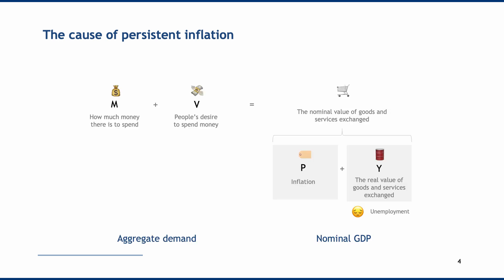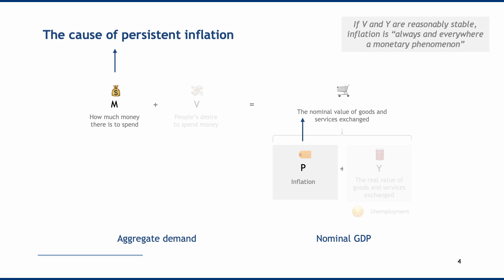However, macroeconomists tend to agree on the cause of persistent inflation: not changes in V and Y, because generally speaking V and Y are reasonably stable, especially over a long time horizon. Therefore the reason for excessive inflation is excessive money supply growth. In our model, if we hold V and Y constant and increase M, that clearly leads to an increase in P. This is the monetarist position — that inflation is caused by excessive money supply creation, and if V and Y are stable, inflation is always and everywhere a monetary phenomenon.